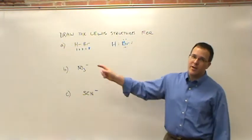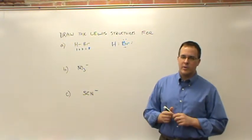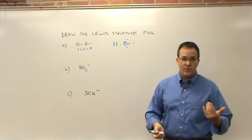Number two, nitrate, the NO3 ion. So we've got to count them up. And we look, it's over in group five or group fifteen, so it's got five valence electrons.